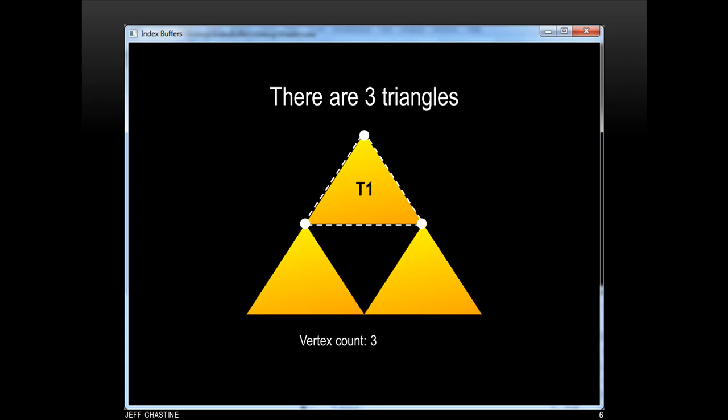For example, we can take the first triangle that has three vertices, and the second triangle which has three vertices, and the third triangle which has three vertices, and then just put them onto the vertex buffer.